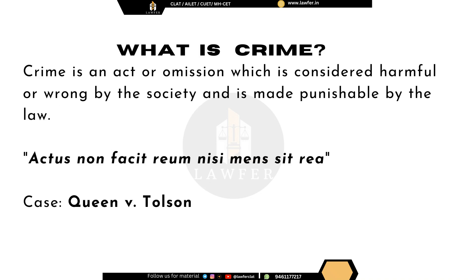We will now move into today's main topic: the Law of Crimes. Before we begin, it is very essential to define what is a crime. Crime is an act or omission which is considered harmful or wrong by the society and is made punishable by the law. So if there is any act we consider harmful but there is no punishment for it, then that will not be a crime. Whenever we consider the definition of crime, we have to keep this maxim in mind: the act alone is not sufficient to commit a crime but it must be accompanied with a guilty mind.